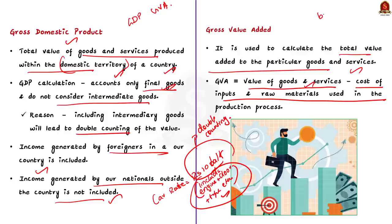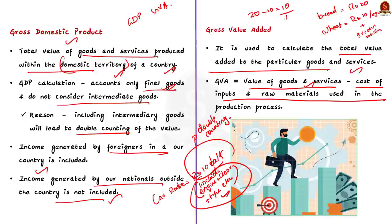For example, assume a bakery produces bread using wheat procured from a farmer. One kg of wheat is used per bread, procured at rupees 10. After procuring the wheat, the bakery adds value by grinding it and baking it into bread, and sells the bread at rupees 20. During GVA calculation we only take into account the value added — deducting the cost of raw materials — so the value addition stands at rupees 10.